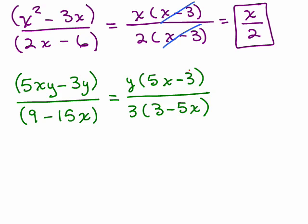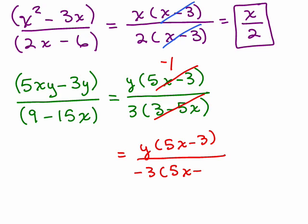The common factor is 3. If they're opposites, you can cancel and you get a negative 1. Alternatively, you can rewrite the problem like this. Pull out a negative sign out of here and write that as 5X minus 3. So that would be another step if you wanted to write it.